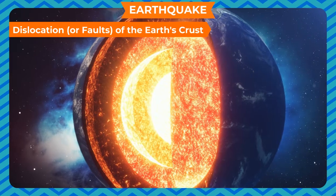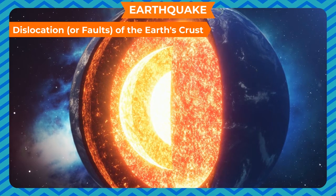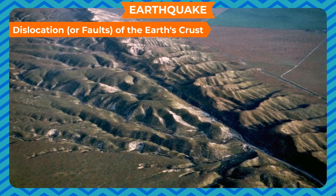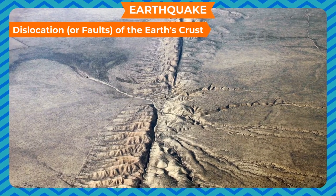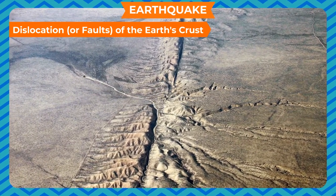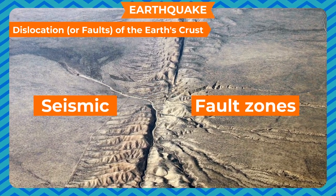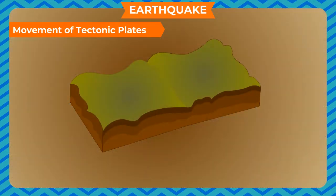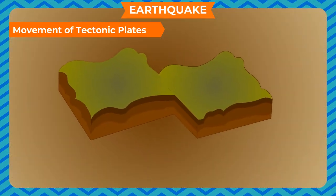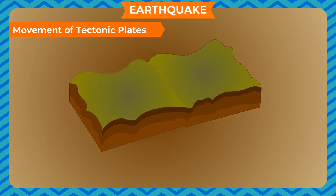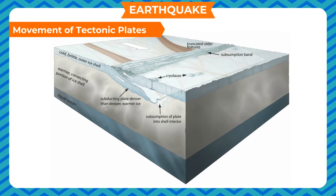Dislocation or faults of the earth's crust: At times, the crust of the earth dislocates resulting in a fault. Faults are zones of weakness in the earth, also known as seismic or fault zones, and these might cause an earthquake. Movement of tectonic plates: The lithosphere is believed to contain 12 crustal plates which float over the molten magma in the mantle. Most earthquakes occur at the boundaries where the plates meet.